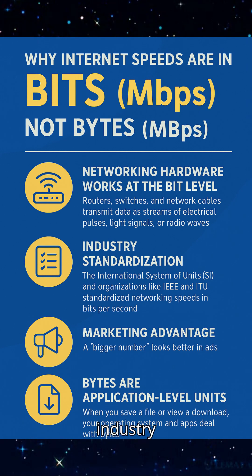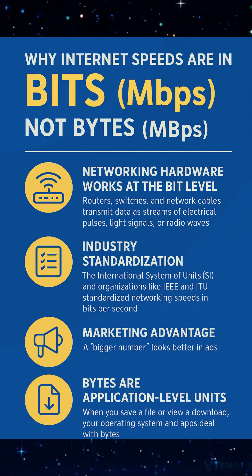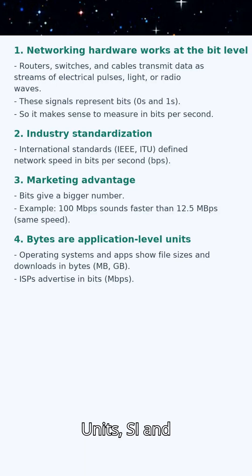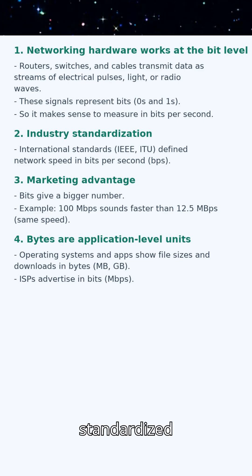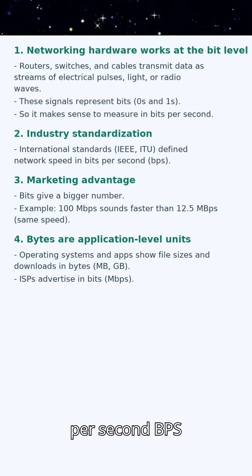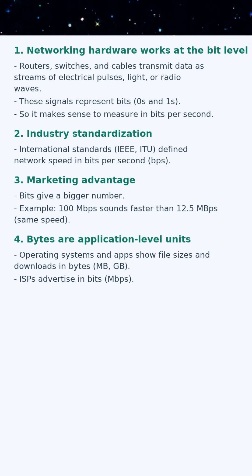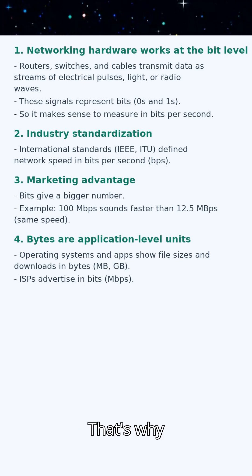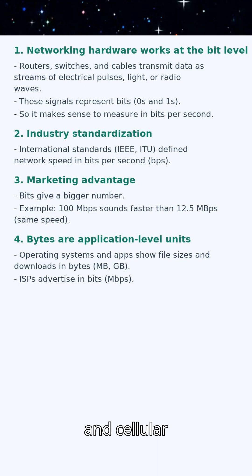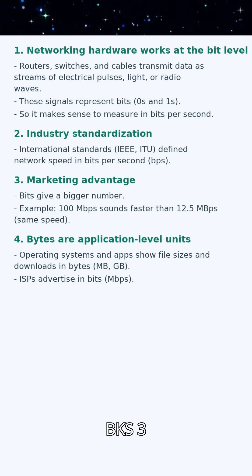Reason 2: Industry standardization. The International System of Units (SI), and organizations like IEEE and ITU, standardized networking speeds in bits per second (bps) decades ago. That's why Ethernet, Wi-Fi, fiber, and cellular networks all advertise in bps.